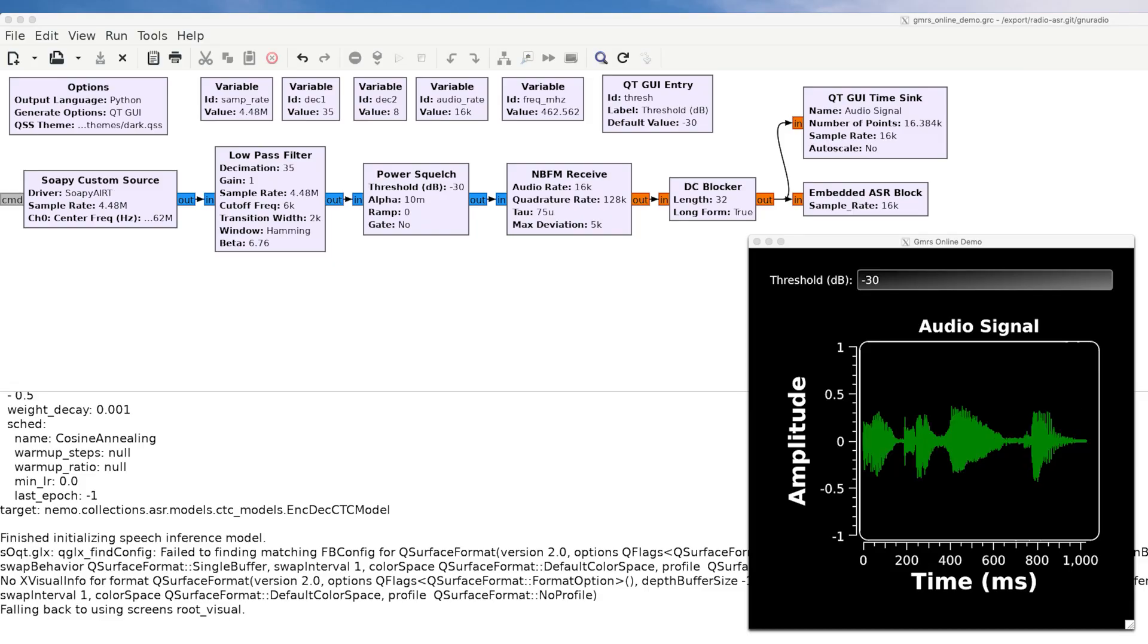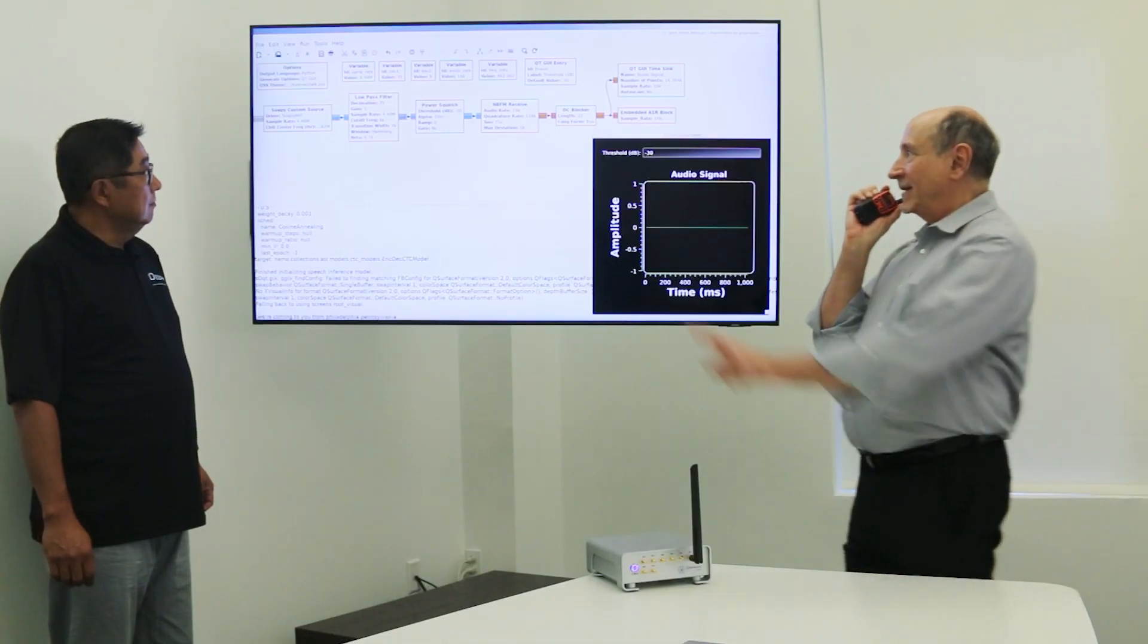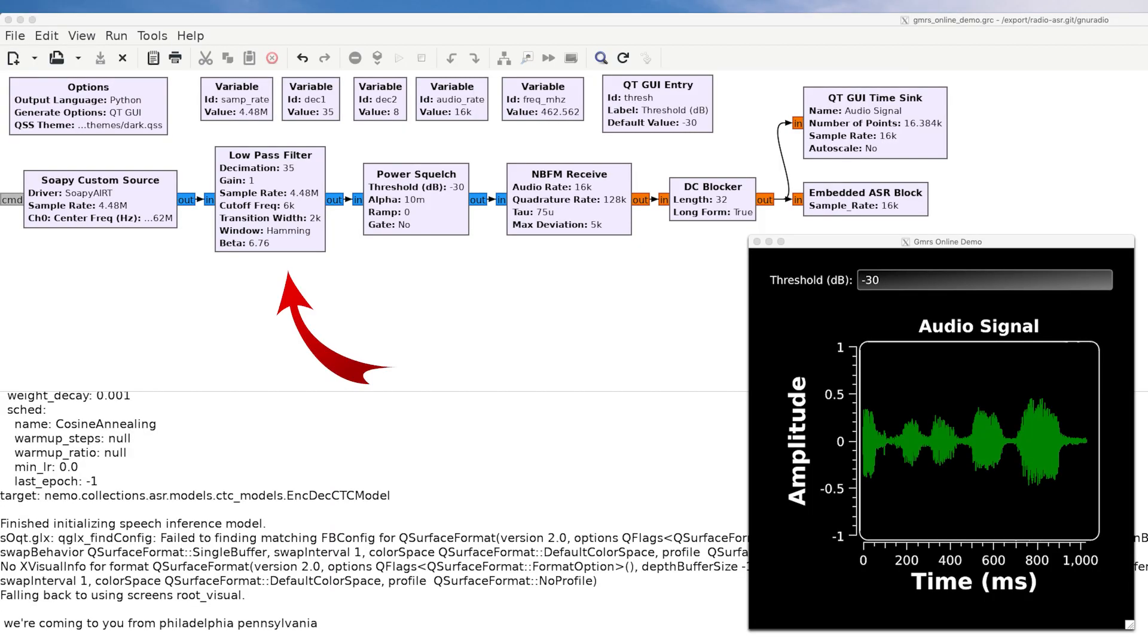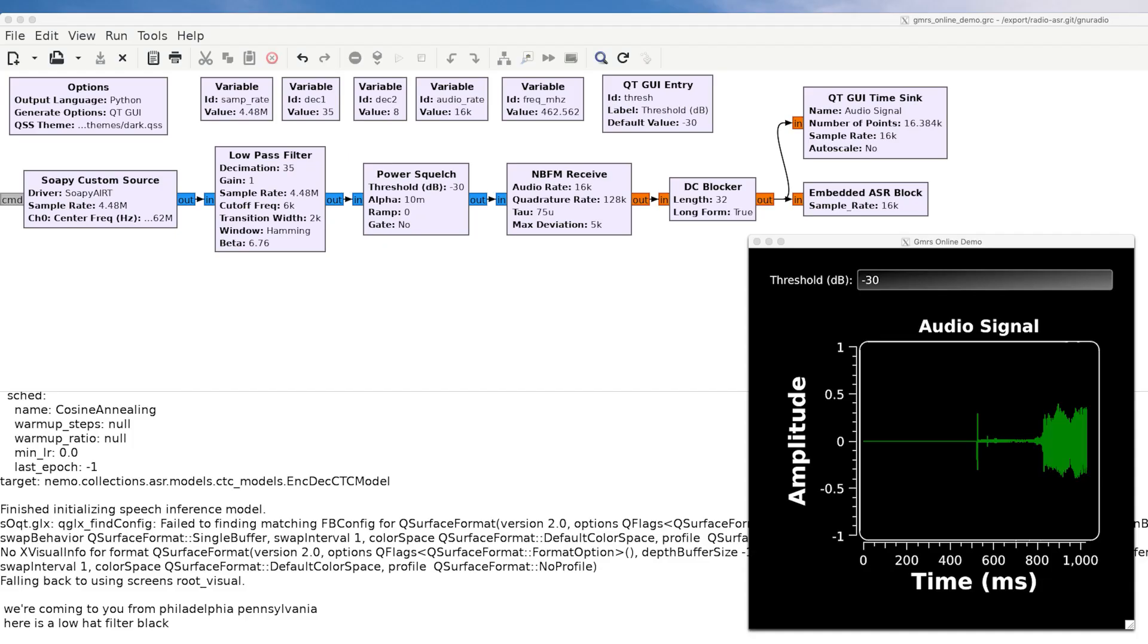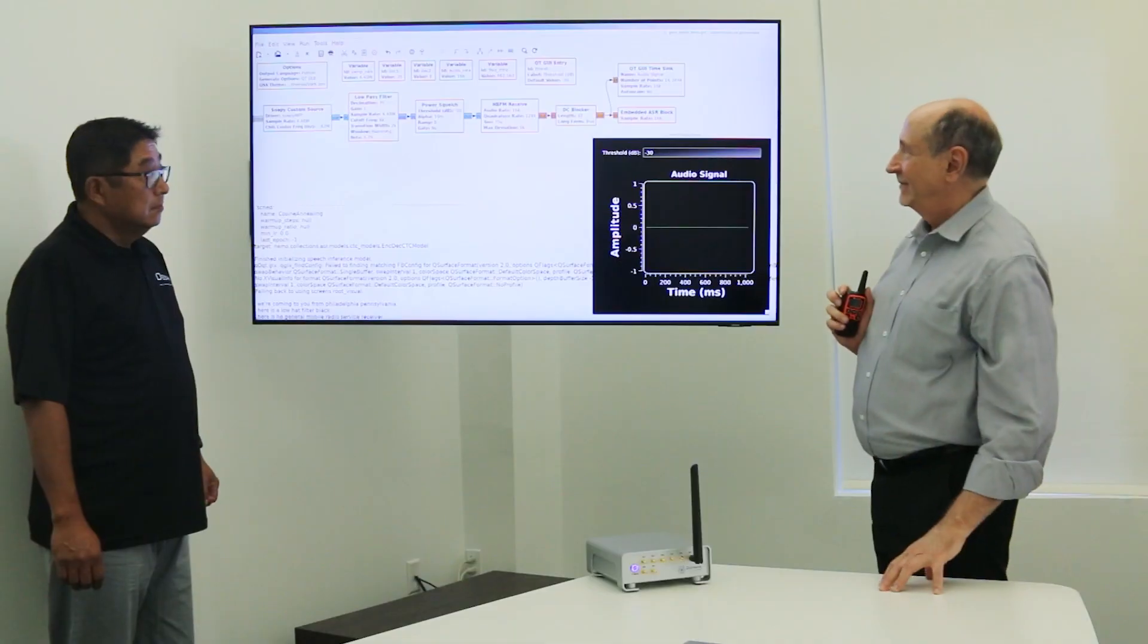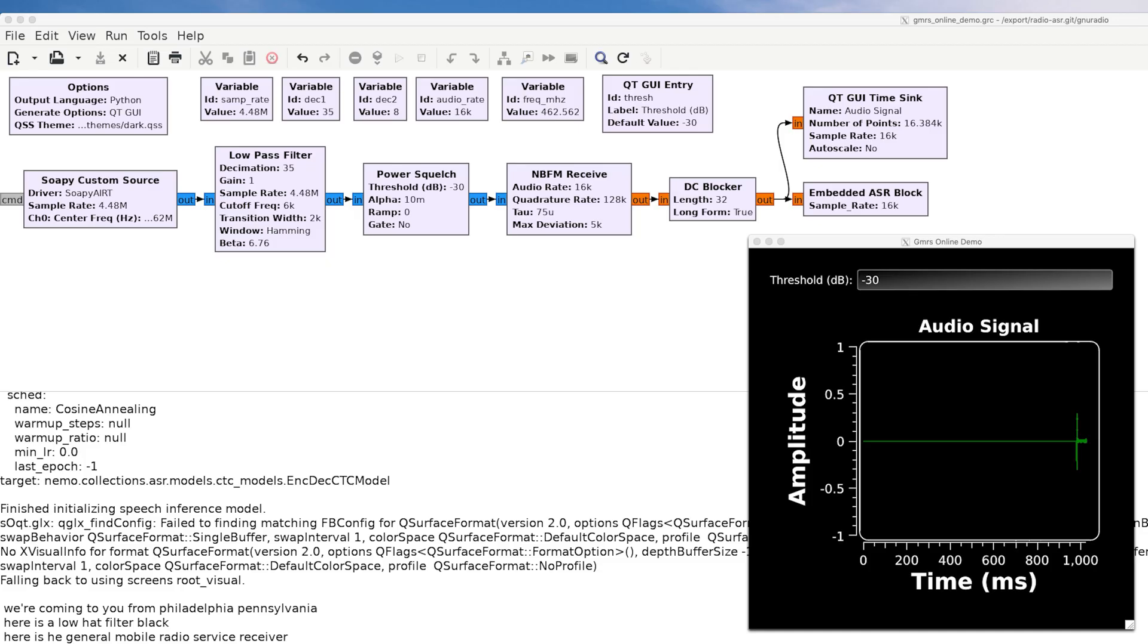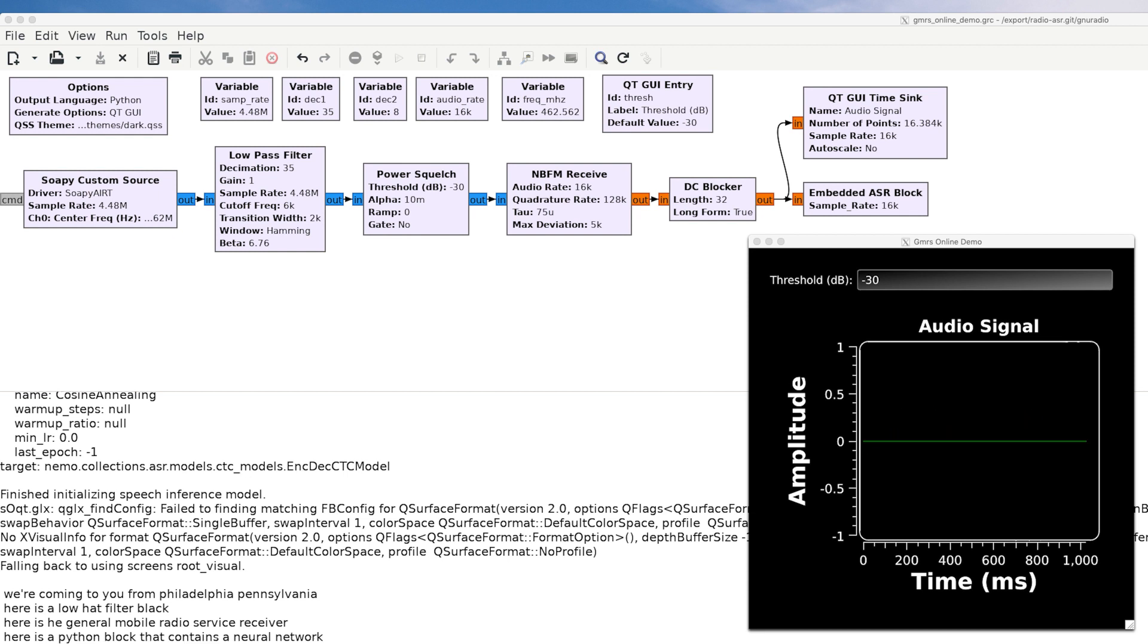We are coming to you from Philadelphia, Pennsylvania. Here is a low-pass filter block. Here is the General Mobile Radio Service Receiver. Here is a Python block that contains the neural network. Here is a Python block that contains an AIRT Ethernet port.